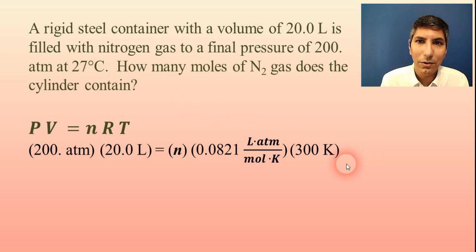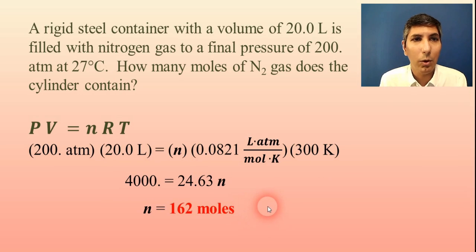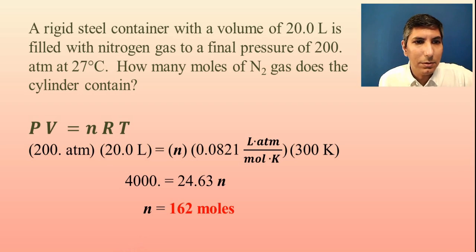Now we can do the algebra. From this point, this is just a math problem. So multiply, and then divide both sides by 24.63, and we get an answer that N, the number of moles, equals about 162 moles of gas inside that container. So once again, we've mined the information out of the problem. We've plugged it into the equation, and then we solve the answer using our calculator.